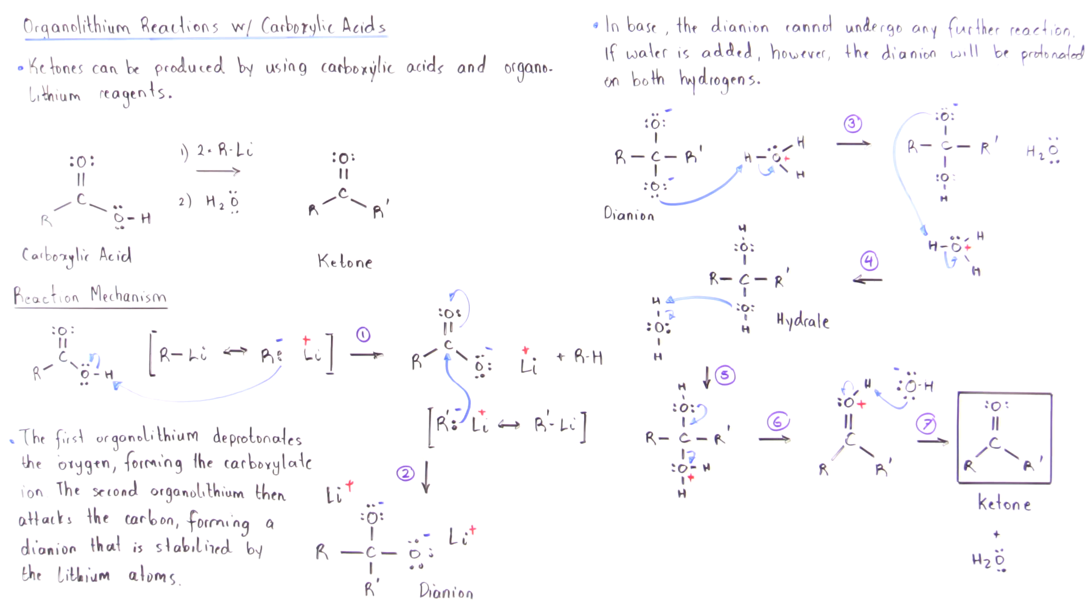In the final step, step seven, the hydroxide produced in step five deprotonates the oxygen, forming the final product, our ketone.